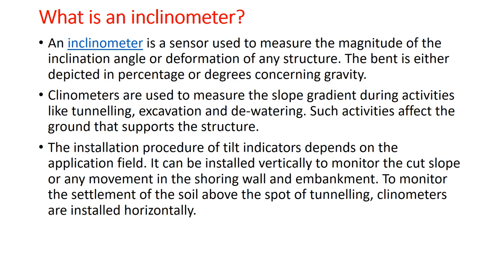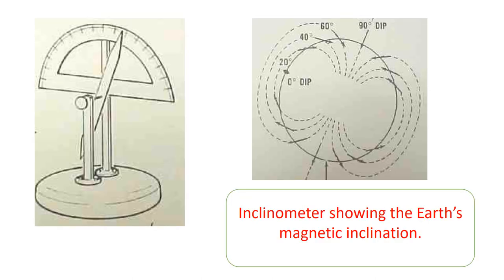The inclinometer measures how much slope has changed in the Earth's surface — slope meaning steepness or gradient. If you want to monitor the settlement of soil above the spot of tunneling, you install the inclinometer horizontally. You can see from the figures how inclination shows magnetic fields at different angles on the Earth's surface.